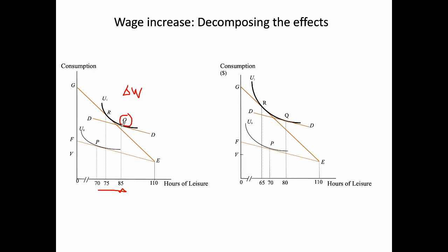The analysis doesn't stop there. The substitution effect is shown by a movement along the new indifference curve — a movement from point Q to point R. Due to the substitution effect, this worker reduces leisure time from 85 to 75 hours. We denote IE for income effect and SE for substitution effect, and here the income effect is more dominant.